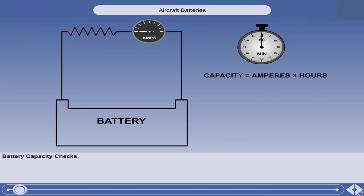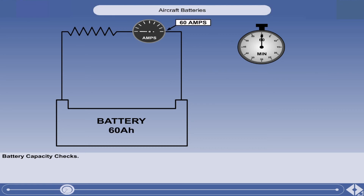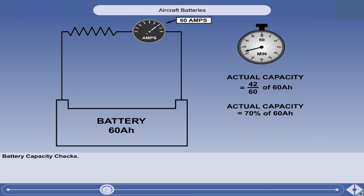The capacity of a battery is the product of the load in amperes that the manufacturers state it will deliver, and the time in hours that the battery is capable of supplying that load. The capacity is measured in ampere-hours. Actual capacity is determined by the battery's deterioration in service. If a 60 ampere-hour battery, when subjected to a 60 ampere load, lasts only 42 minutes, then the actual capacity is 42 sixtieths, or 70% of its rated capacity. In other words, the battery is only 70% efficient.